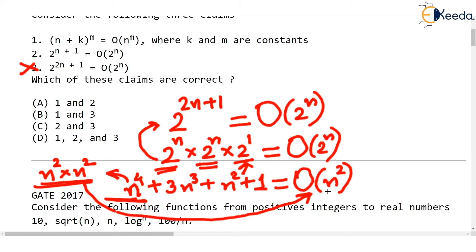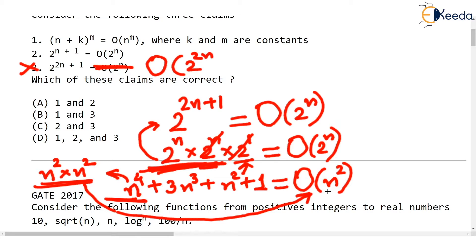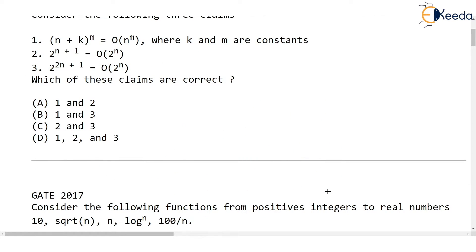The polynomial is O(n⁴) because the highest degree is 4. Similarly, since 2^n is being multiplied twice here, you just can't cancel out one 2^n term and the constant and say this is O(2^n). This has to be O(2^(2n)). You can say that, dropping the constant multiple of 2. But it can't be O(2^n). So the answer for this question is that claims 1 and 2 are correct — the answer is option A.